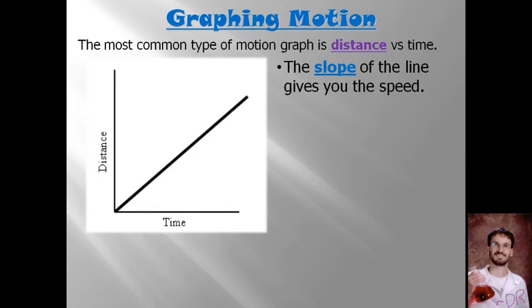This object is moving. We can tell that it's moving because its distance between it and a reference point is changing over time. In fact, the distance is getting larger over time. So we can say that this object is moving away from the reference point.